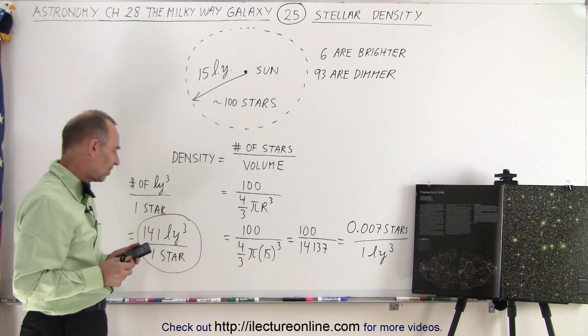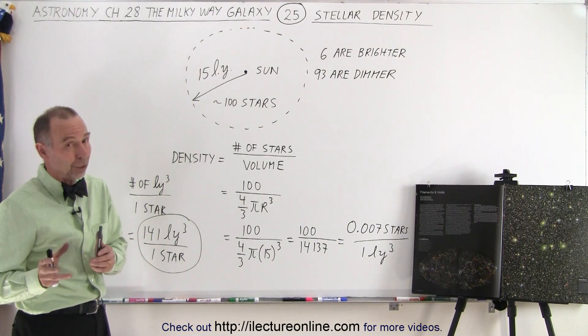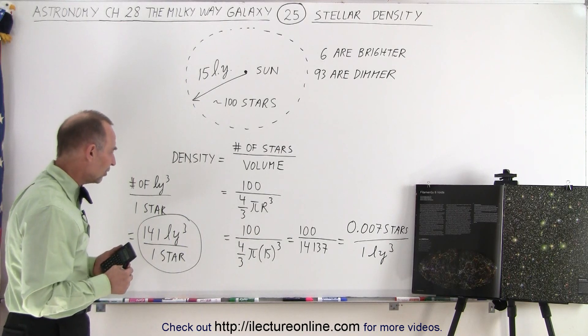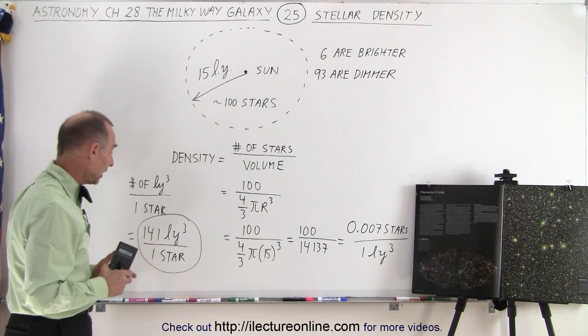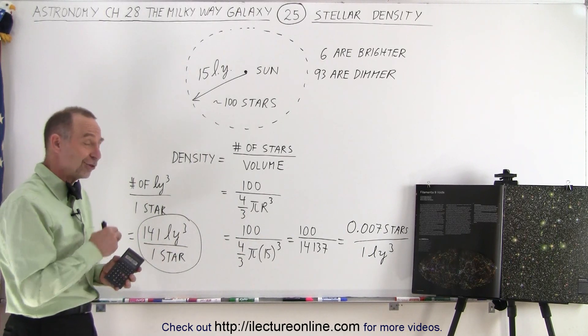So that seems to be the density in our particular neighborhood, but we know there's other places in the galaxy where it's far more dense, and we'll get to that in another video. This at least gives us an idea. In our backyard, we get a lot of cubic light years for every star in our neighborhood.